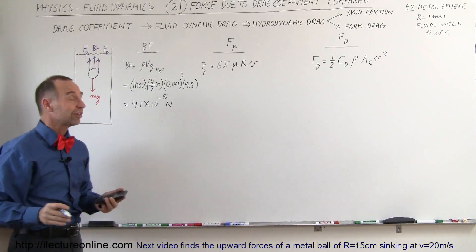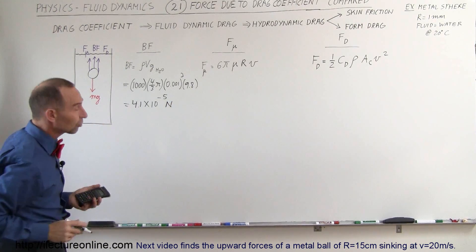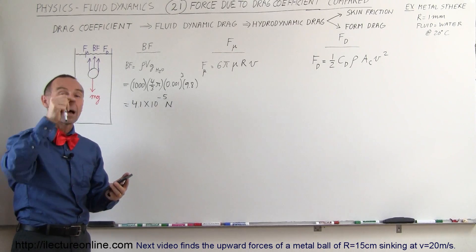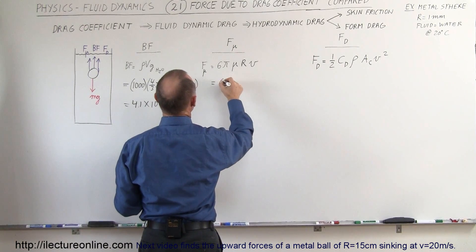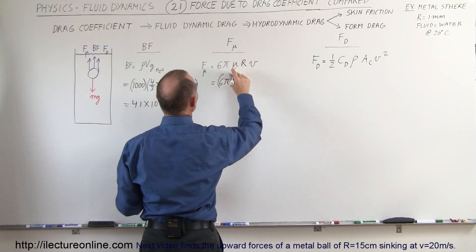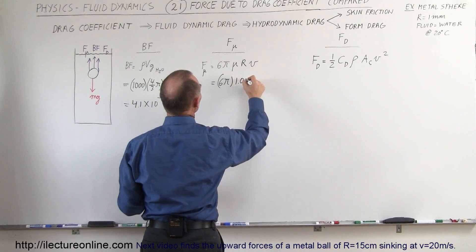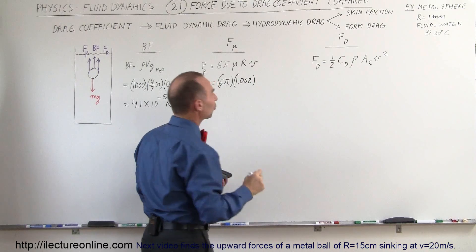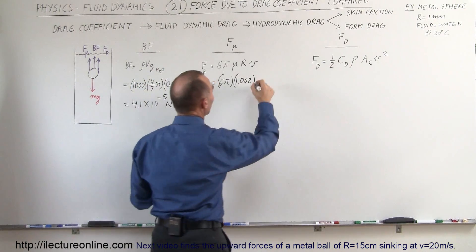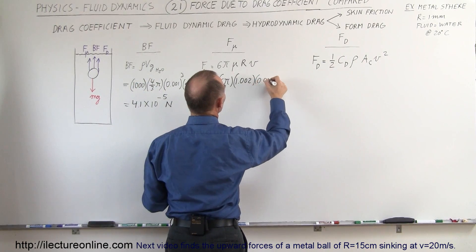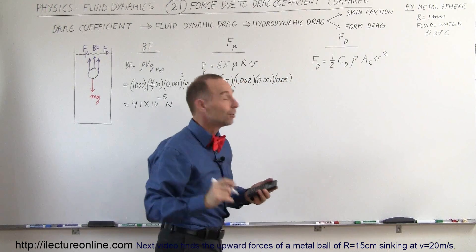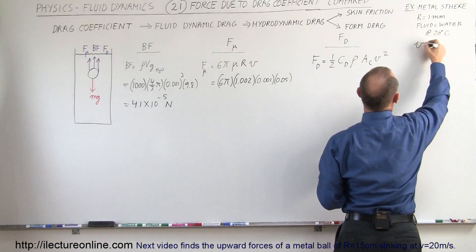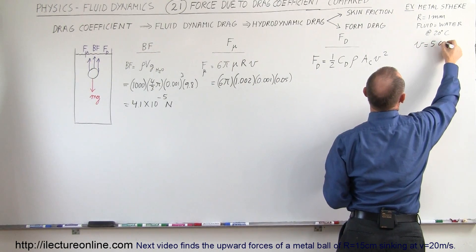That's a relatively small force. Let's compare that to the force caused by the viscosity of the liquid with the object moving through the liquid. This would be equal to 6 times π times μ, which is 1.002 for water at 20 degrees Celsius. The radius would be 0.001 and the velocity would be 0.05. The velocity was supposed to be 5 centimeters per second.